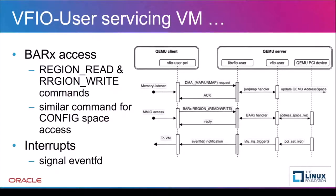The other significant functions that the server performs during steady state operation are to handle BAR accesses, config space accesses, and process interrupts. The BAR access part is the most frequently executed operation and therefore forms one of the performance-sensitive parts, along with interrupt delivery. Elena will give an overview of how interrupts are handled later in the presentation.